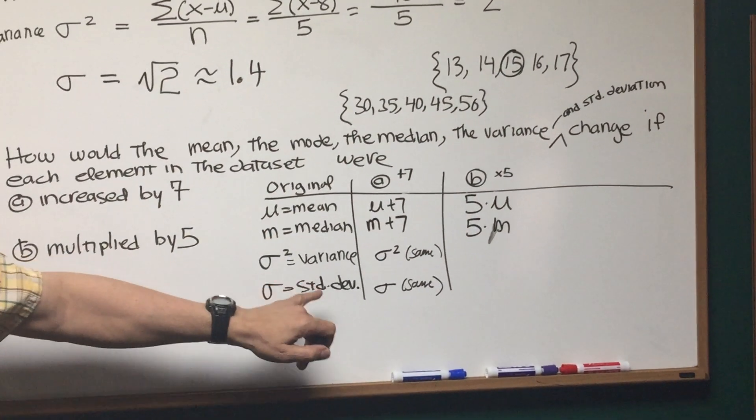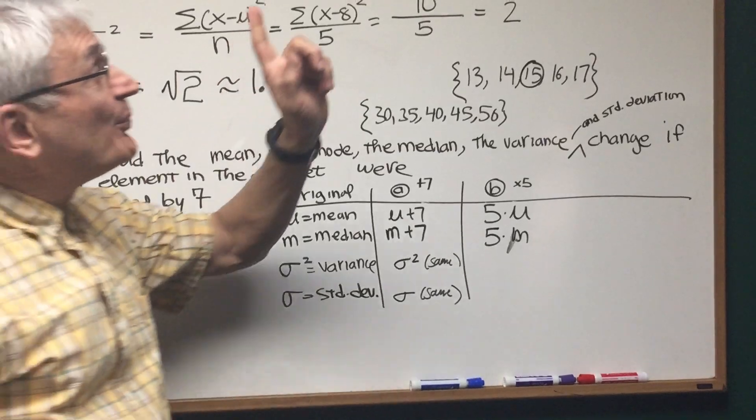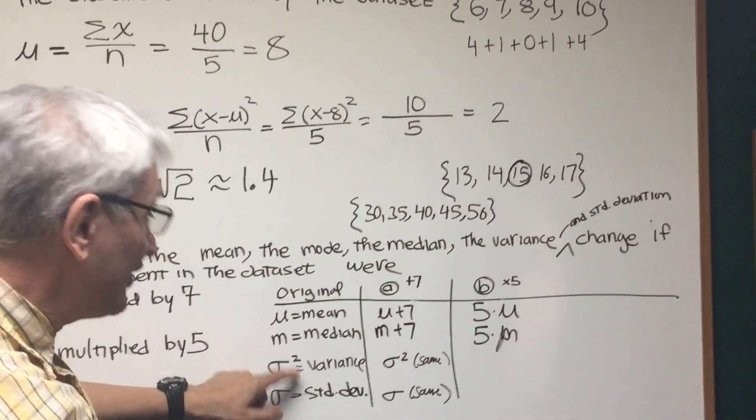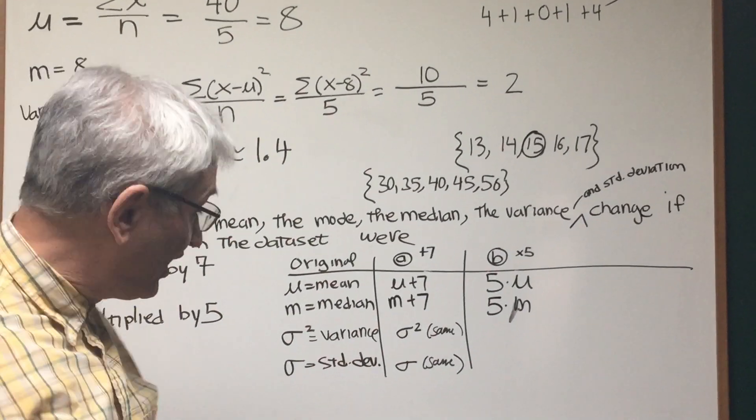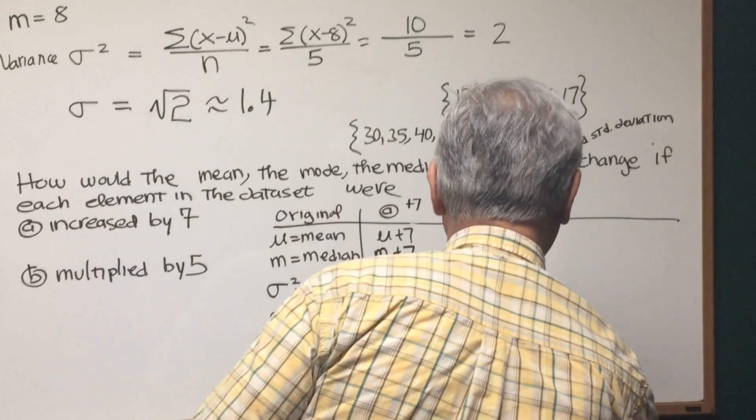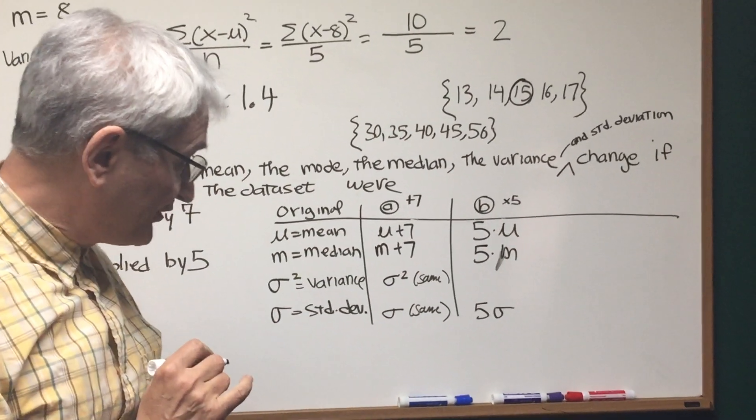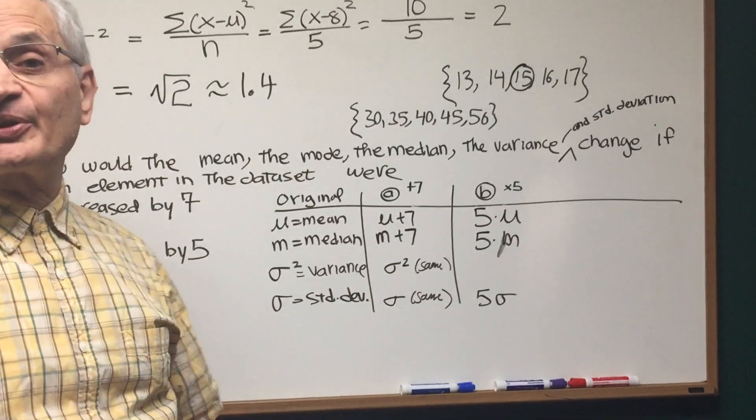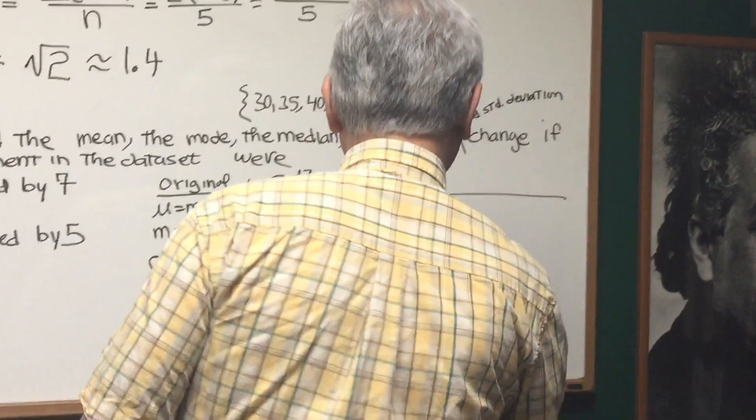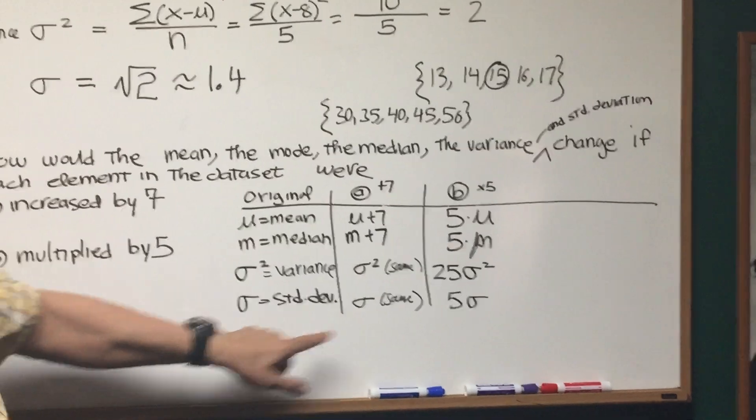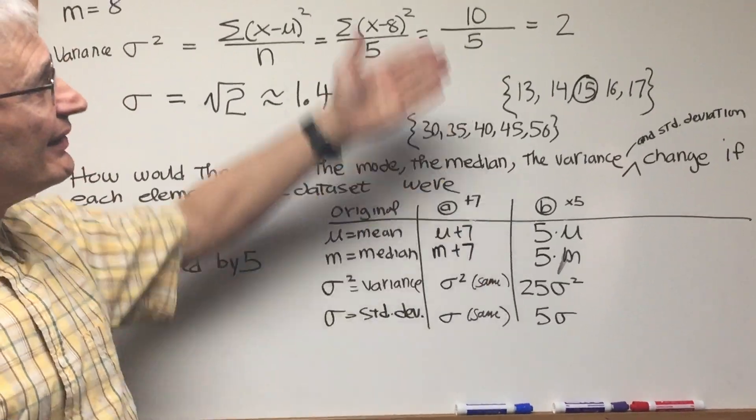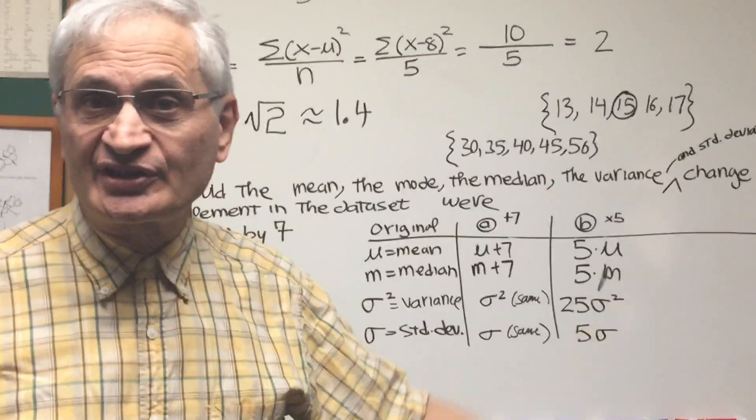Now what happens to the variance and the standard deviation? Notice that when we multiply each of these by 5, there's a greater spreading out on the number line. So yes, these two measures of dispersion are going to change. The standard deviation is going to change by a factor of 5, so this is going to be 5 times σ. And because of the square property of the variance, the amount by which the variance is going to change is 25. So it's going to be 25 times the original variance, and 5 times the original standard deviation. So that's how you answer a question like this.